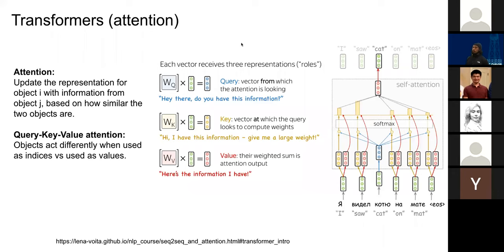In transformers this is typically done using query-key-value attention. The objects act differently when used as indices versus as values. For example, with words like 'I saw the cat on the mat,' the relevance between 'cat' and 'mat' — we might transform them into queries and keys to calculate relevance scores, but when updating the representation for 'cat' with information from 'mat,' we may want to do the update slightly differently.